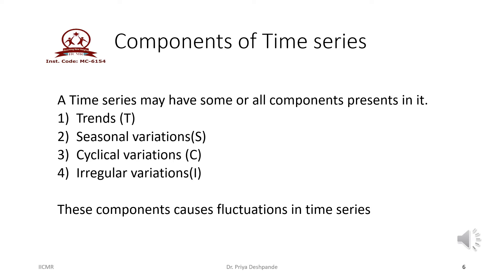Time series is a function of time and it has four major components: the first one is trend, denoted by capital T; second is seasonal variation, denoted by capital S; third is cyclic variation, denoted by capital C; and the fourth is irregular variation, denoted by capital R. These variations cause fluctuations in the time series and play a very important role in time series analysis. Any one or all four components may be present in a time series.